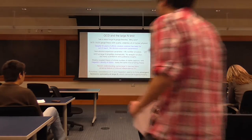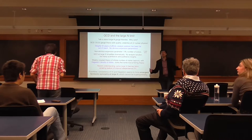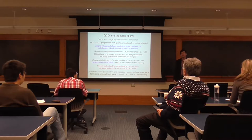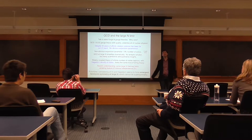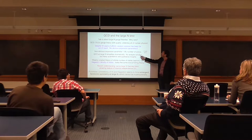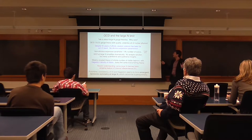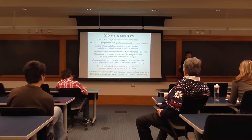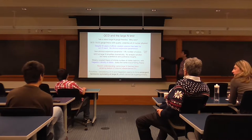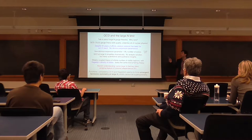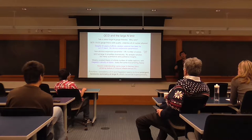Let me start with some motivation. This talk is going to be about large N. One question you may wonder is why should you care. The real world has QCD with three colors. Why should you care about large N? The reason you care about QCD is that it underlies, for instance, all of nuclear physics. It's a very important theory for understanding the world. But despite 40 years of efforts, any attempted analytic solution of QCD has been far out of reach. There are no obvious expansion parameters in the theory.